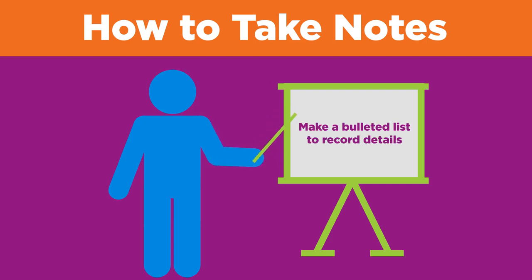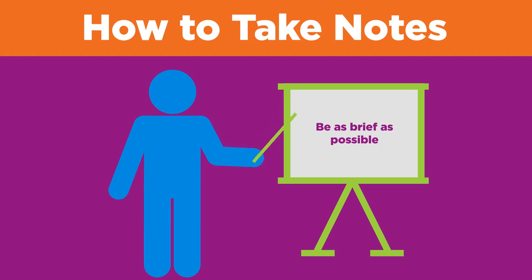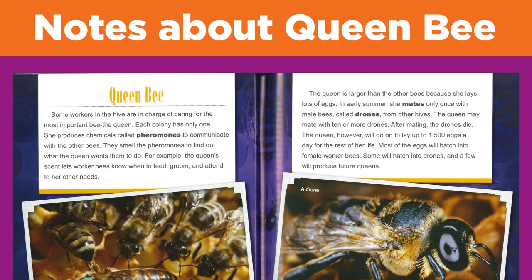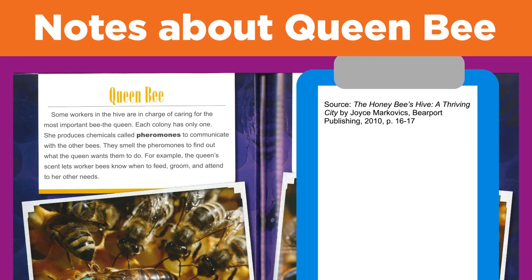Write down single words or phrases instead of full sentences. You can even make a bulleted list to record details. Be as brief as possible, but write down enough information so that your notes will make sense to you later. For example, with your topic about bees and your first question about the role of the queen, what information should you record? 'Most important bee in the hive' — that's interesting, I should note that. Because this is a very short phrase of only three words, and because this information would be difficult to explain in our own words, it's okay to write the same phrase used in the book: 'most important bee.'